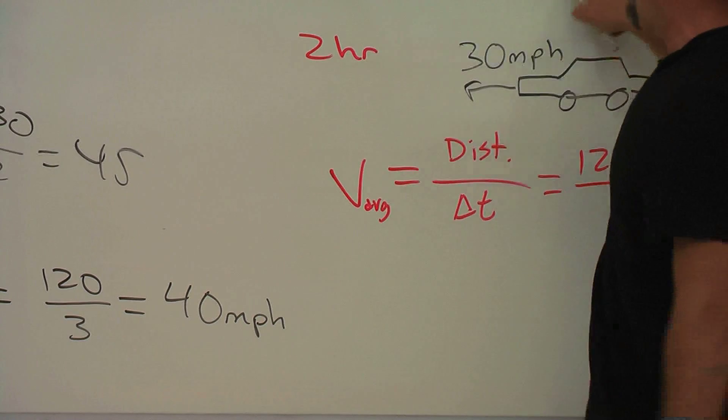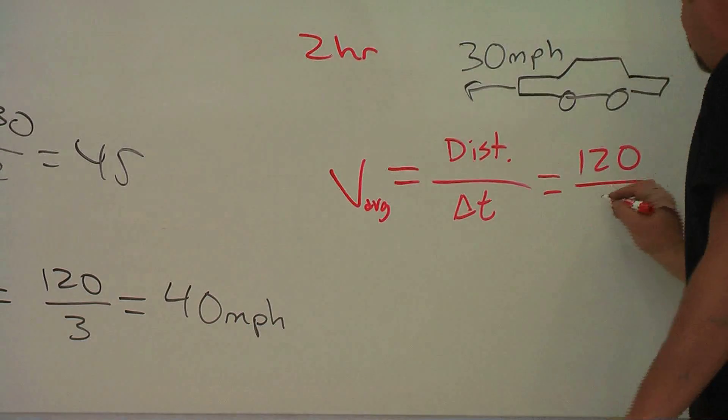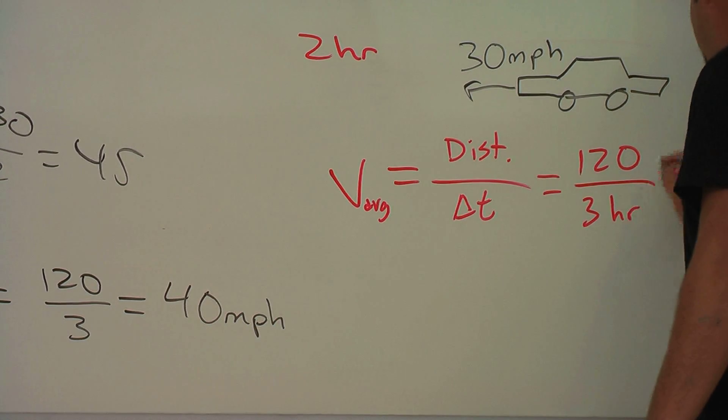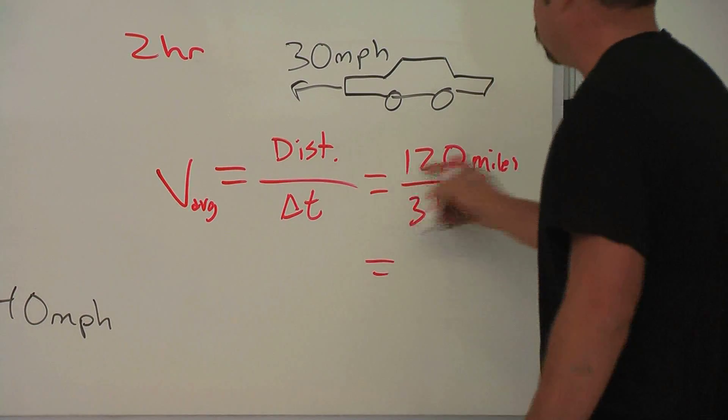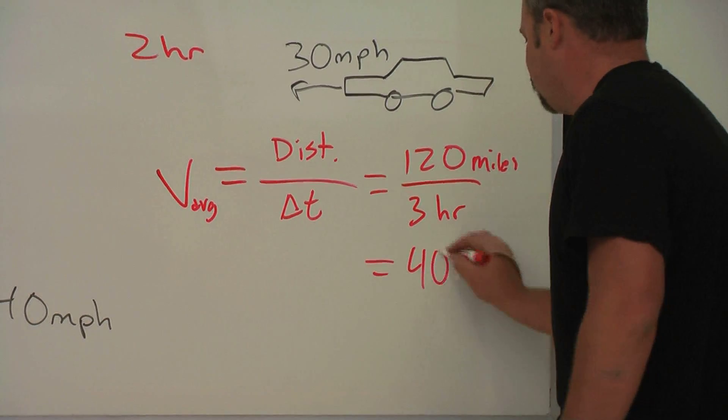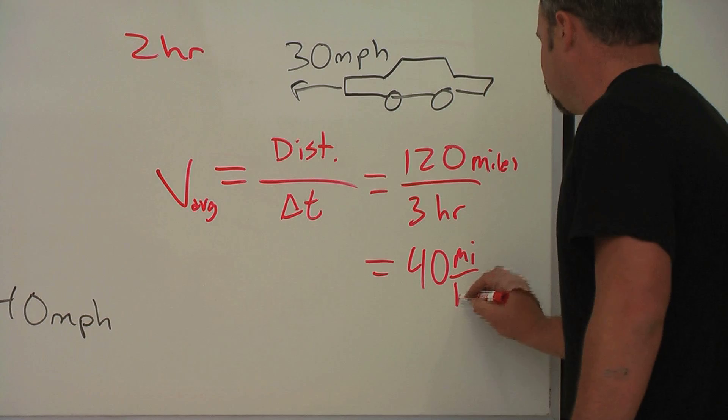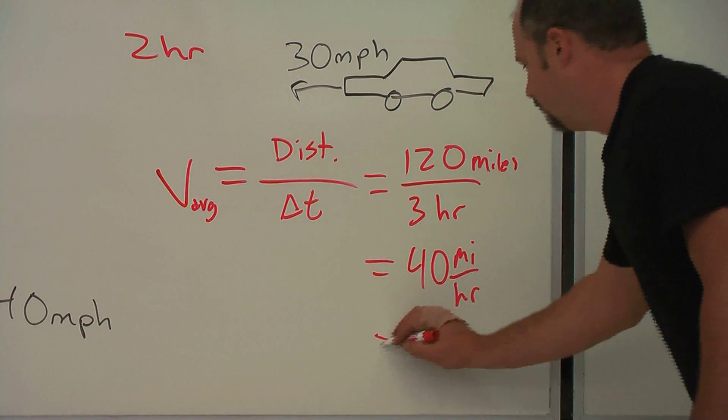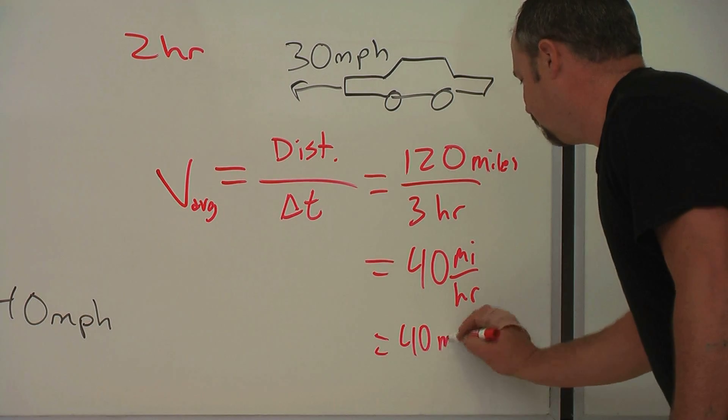Well, the total time, it took one hour going. It took two hours going back. So the total time is three hours, 120 miles. And 120 divided by 3, that's 40 miles per hour, or MPH, as we abbreviate it.